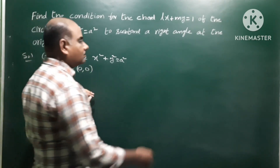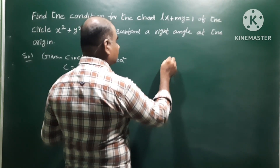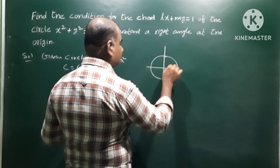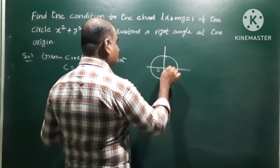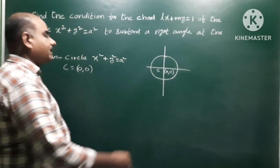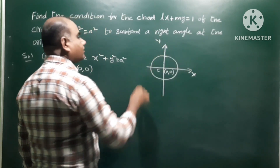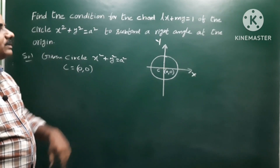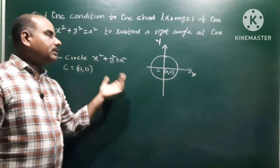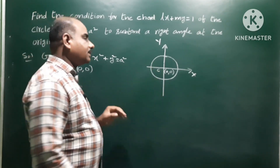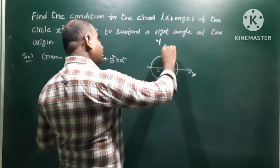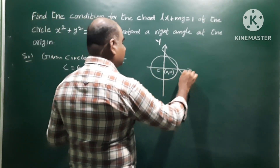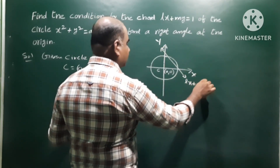If we draw a rough diagram of the circle with center at coordinates (0, 0), x-axis, y-axis — and take the chord of the circle — the chord is the straight line Lx plus My equals 1. This chord cuts the circle, and the points are A and B.